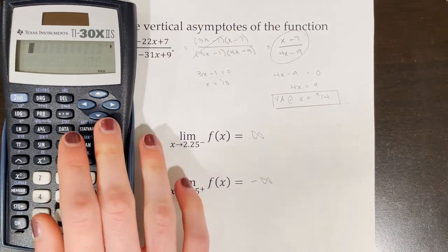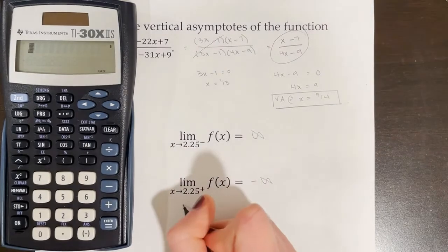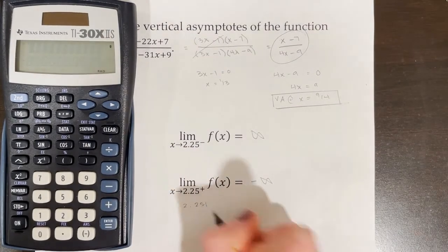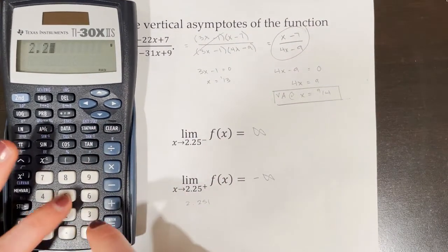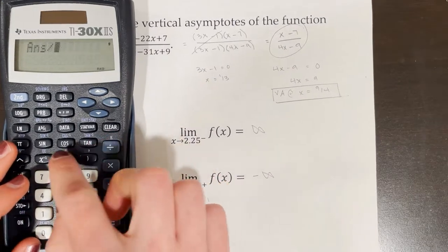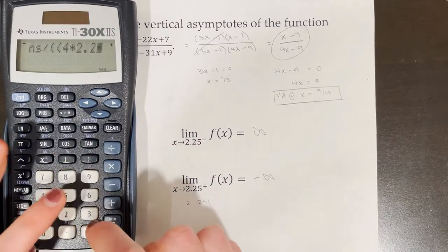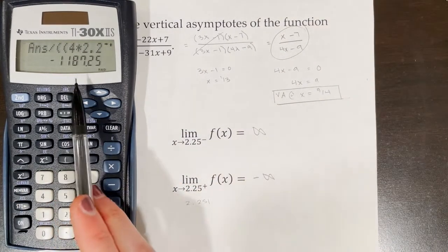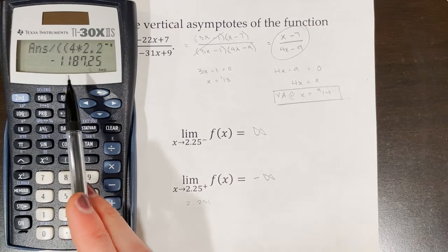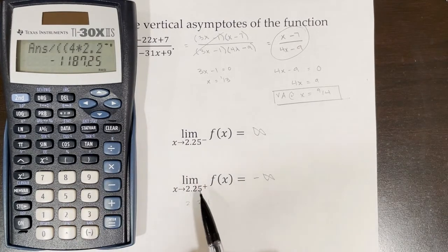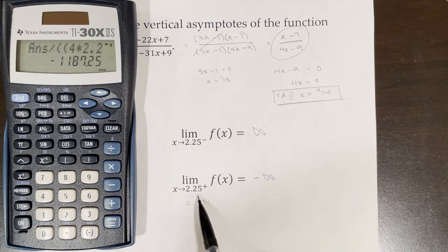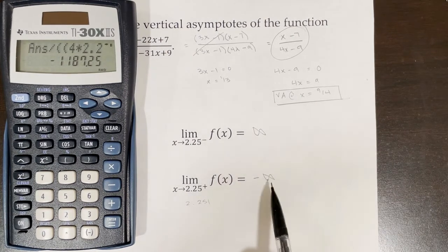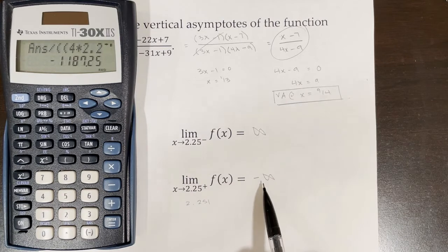For even more precision, plugging in 2.251 gives (2.251 − 7) / (4 × 2.251 − 9) = −1187.25. This confirms that as x gets closer and closer to 2.25, the values get lower and lower, heading further toward negative infinity.